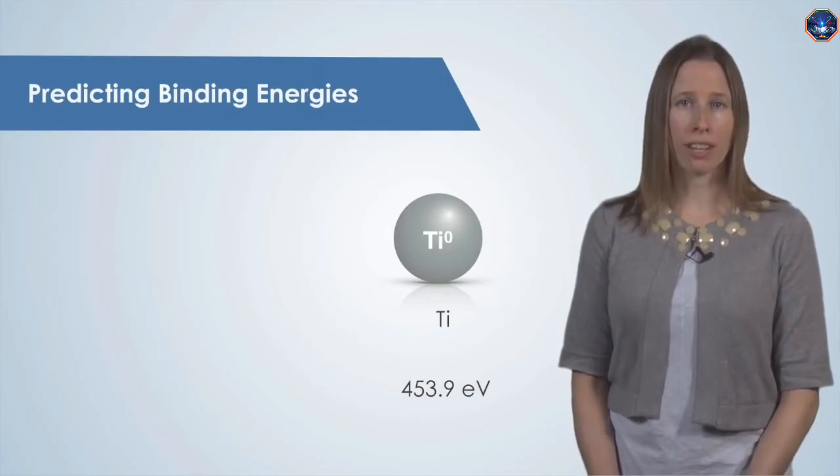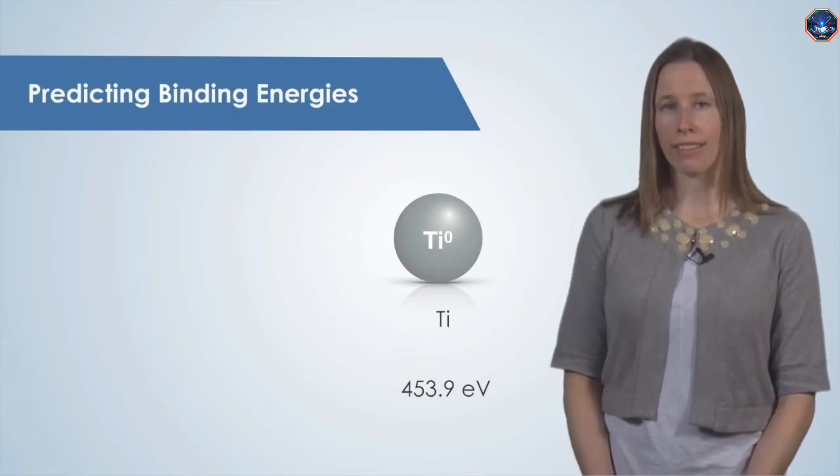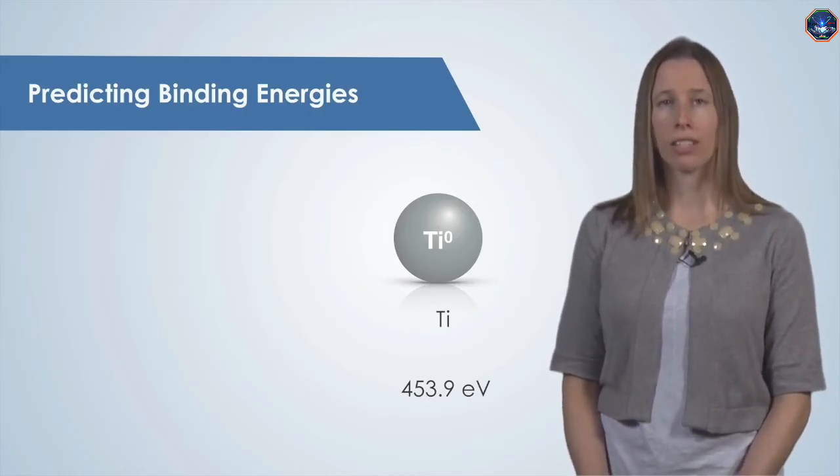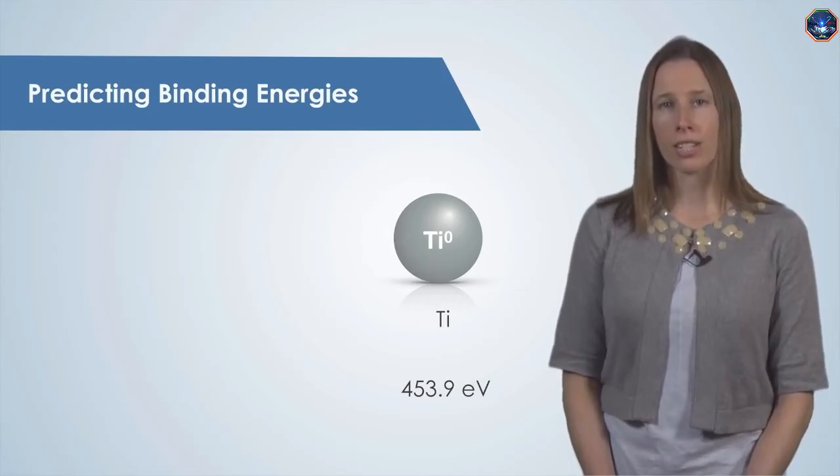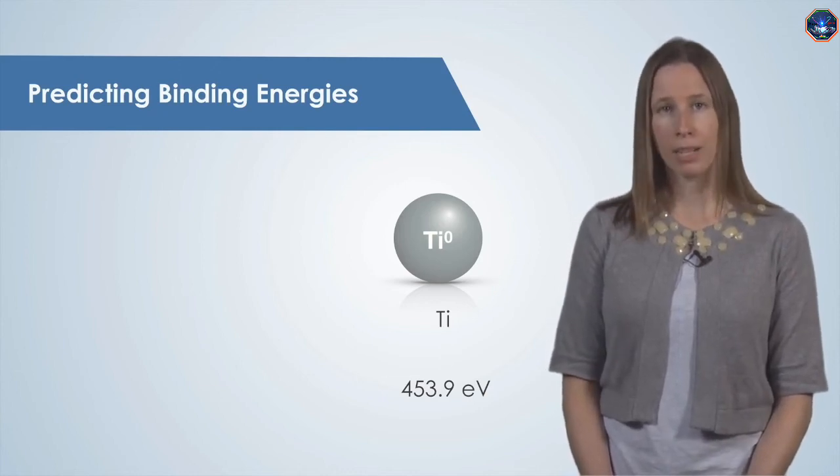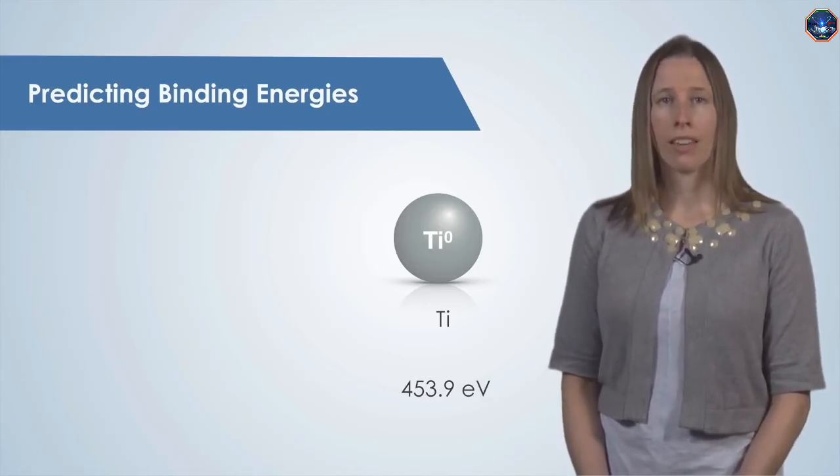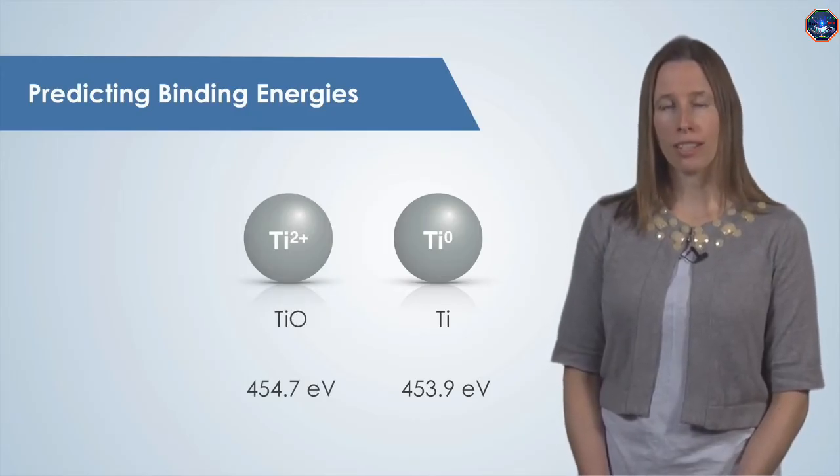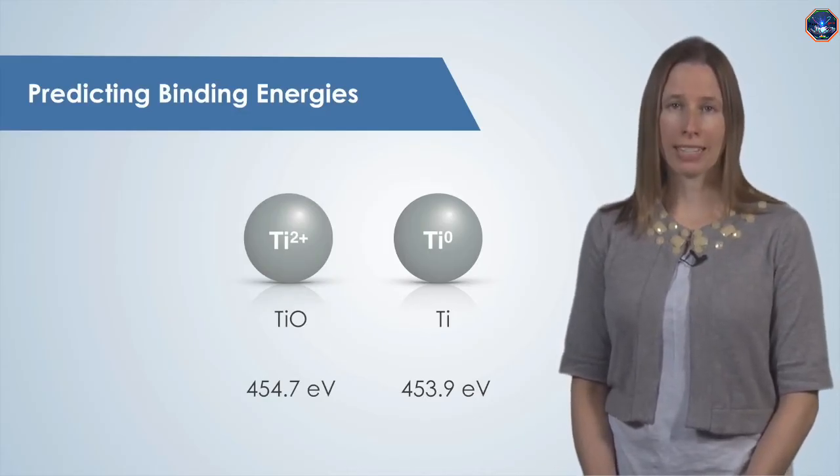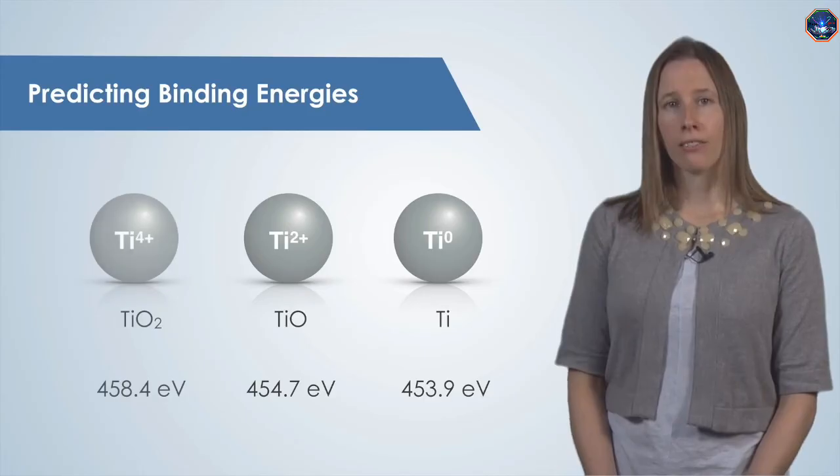The oxidation state of a metal can also affect the binding energy of an electron. The oxidation state refers to the electrical charge on the atom. Atoms are typically neutral, but if they gain or lose an electron, they can become negatively or positively charged. Let's consider titanium as an example. Titanium metal exists in an oxidation state of zero, and its titanium 2p peak appears at a binding energy of 453.9 eV. In the 2-plus oxidation state, two electrons have already been removed from the titanium. It is therefore more difficult to remove an electron from titanium 2-plus than from elemental titanium, and the binding energy is a bit higher.